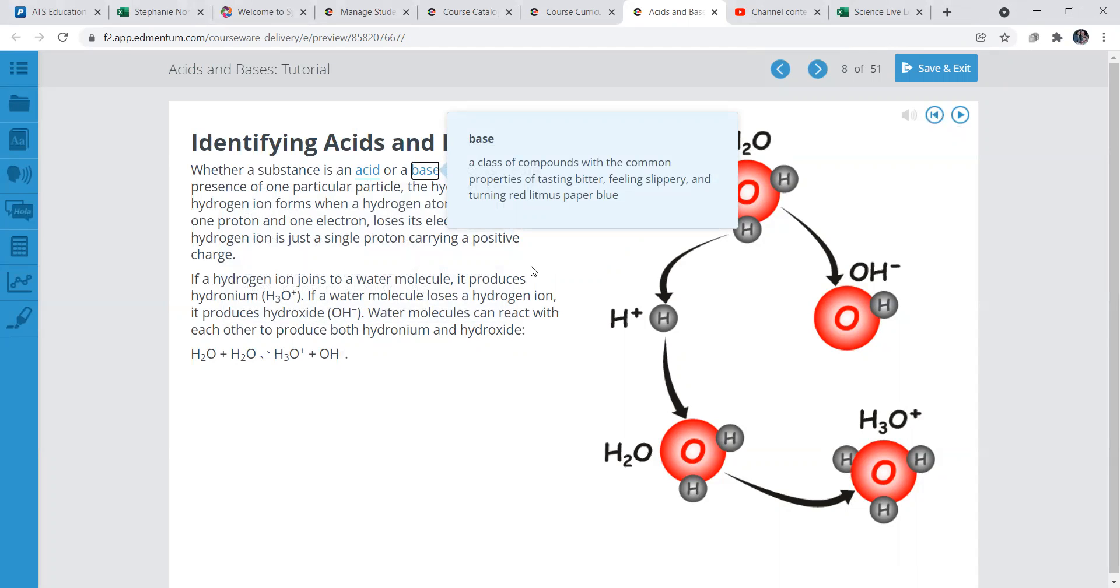A base is a class of compounds with the common properties of tasting bitter, feeling slippery, and then turning red litmus paper blue. Pretty interesting. I did an experiment about that a while ago. If you refer back to a mini lesson I did about experiments, I showed you how the acids and bases kind of react.